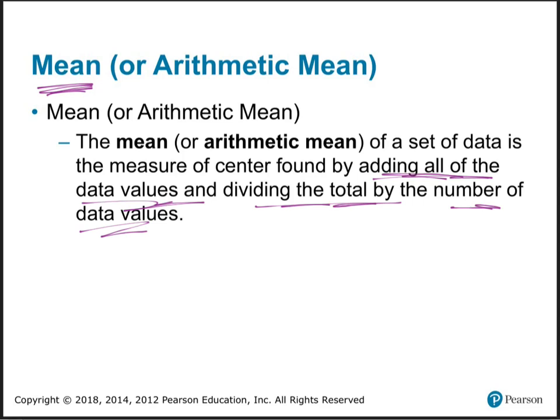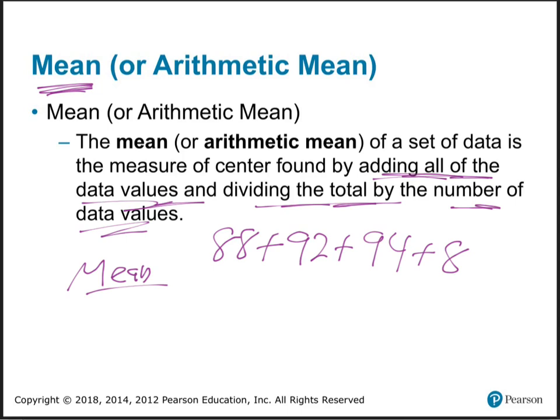Why didn't we just stop with the mean? Say you're wondering how you're doing in class — you get an 88, 92, 94, and 86 on four exams. You'd add them and divide by four, which comes out to 90. That's a great average, that's the middle. But why do we have these other types? If there's a value that's skewed, it ruins the entire result.